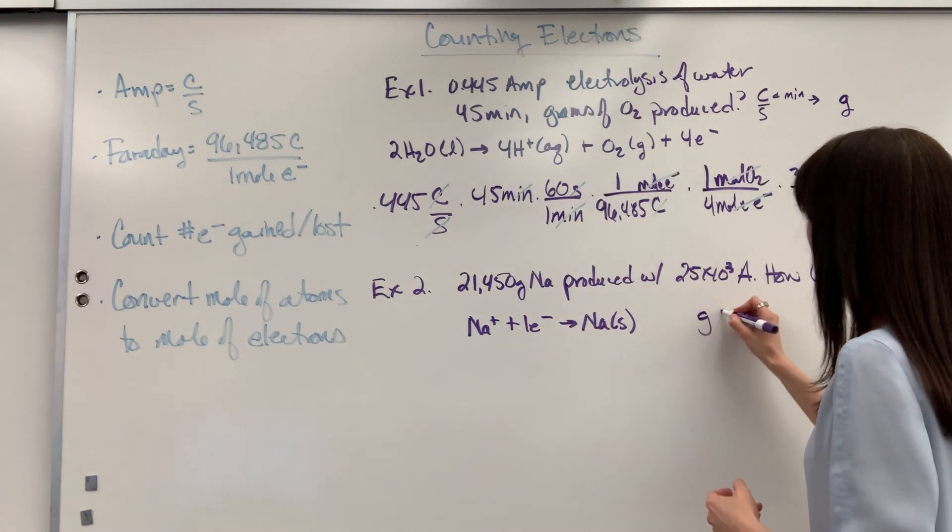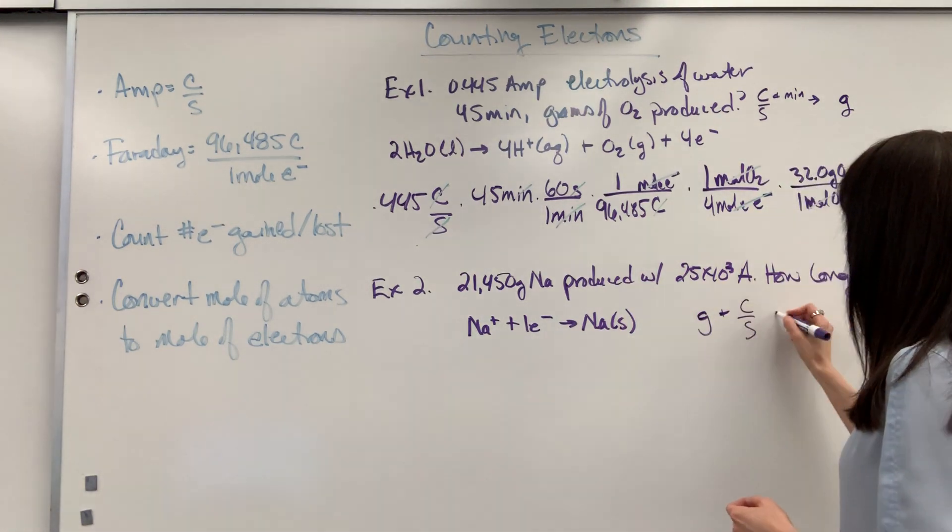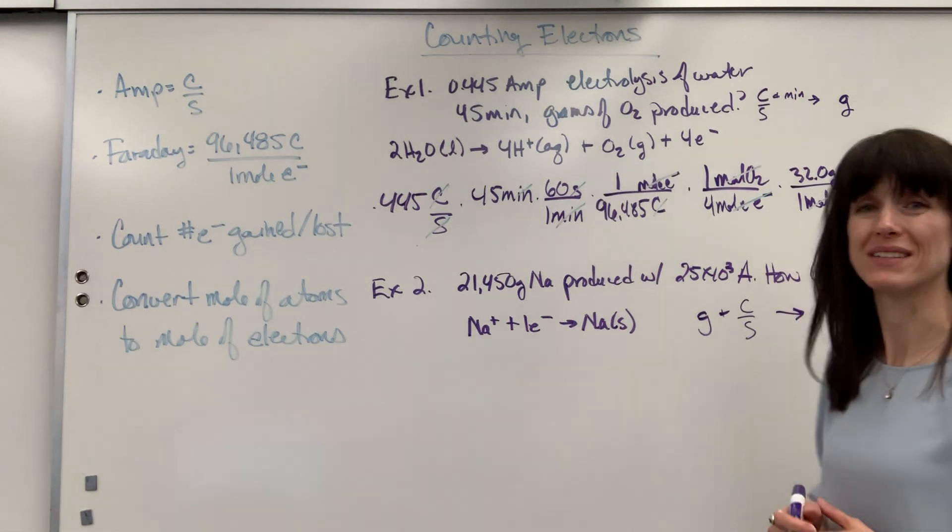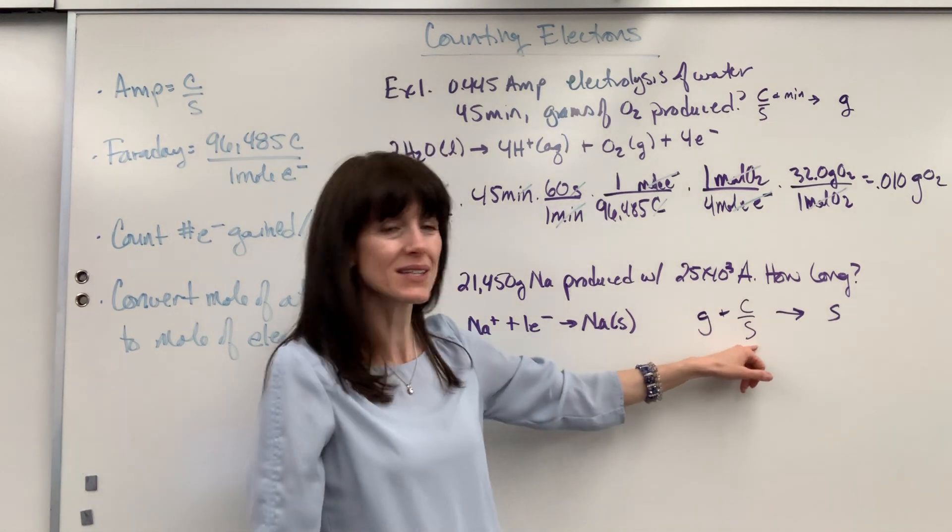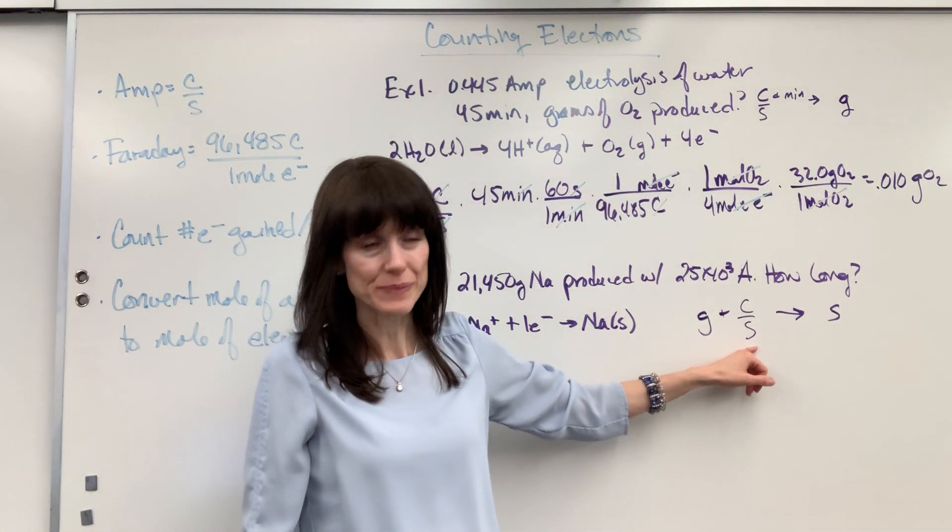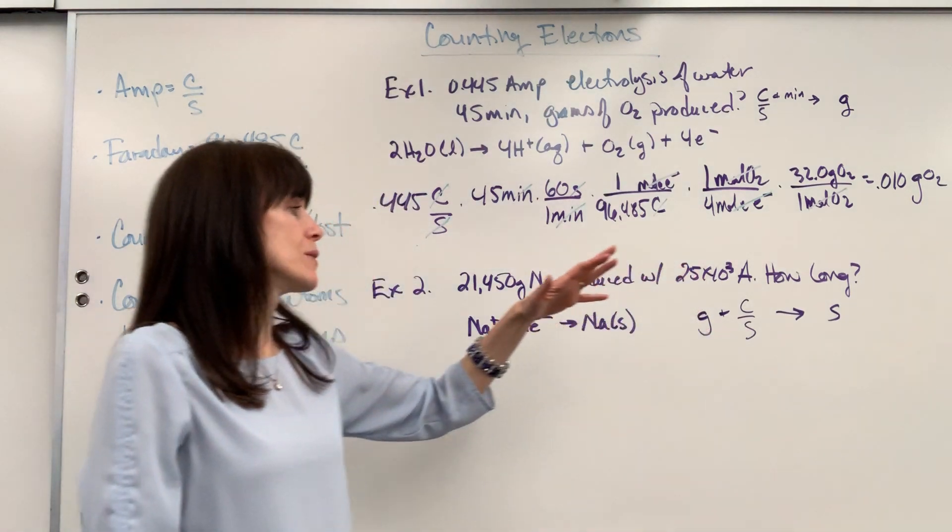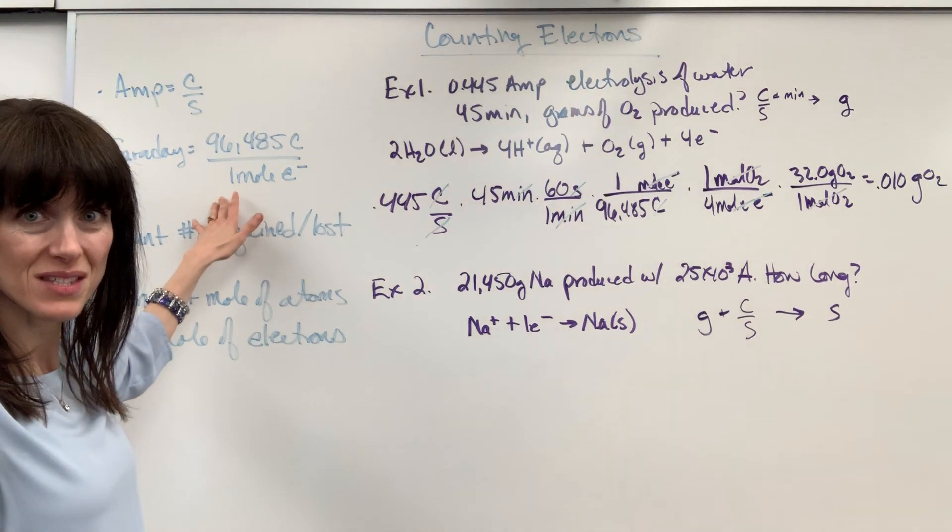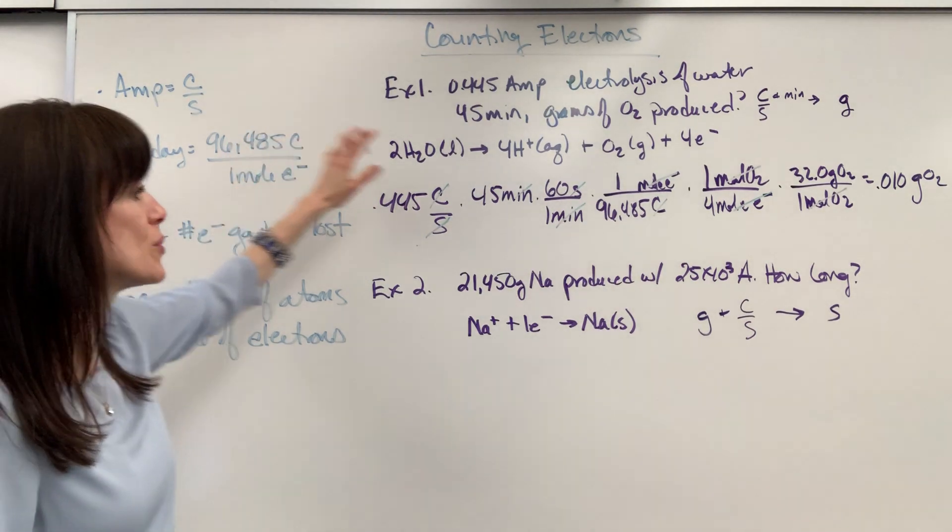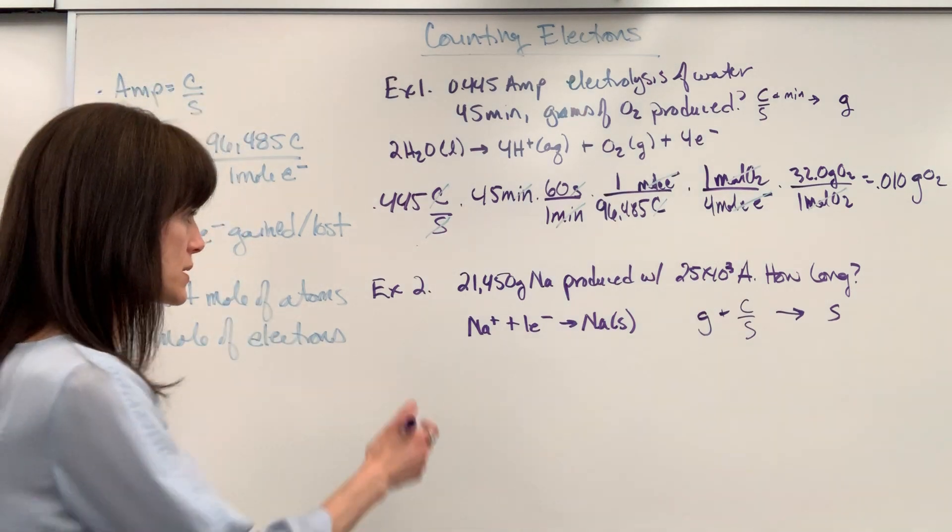Let's look at what we want for units and what we're given. So, I'm given grams. And remember, I always break apart amps. That's going to be coulombs per second. What do I want? I want seconds. So, I can see seconds right here, which means I want to get that all by itself. So, I'm going to start with mass. And we're going to bring that to moles, then moles of electrons. Then, I can use this great bridge, Faraday's constant, to go from mole of electron to coulomb, which will allow me to isolate time. All right, let's work it together.